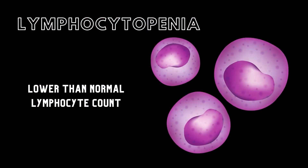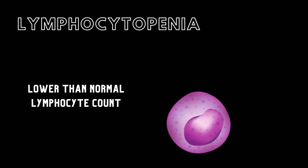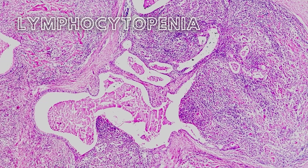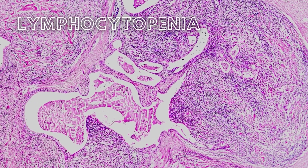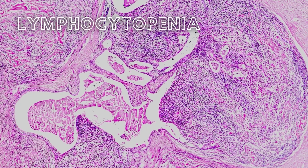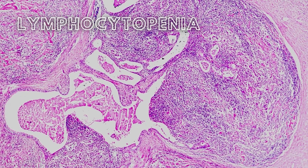Lymphocytopenia is the opposite of lymphocytosis. With lymphocytopenia, the body doesn't have enough lymphocytes to help defend the body from viruses, cancer, and other intruders. Lymphocytopenia is linked to many different diseases and conditions.